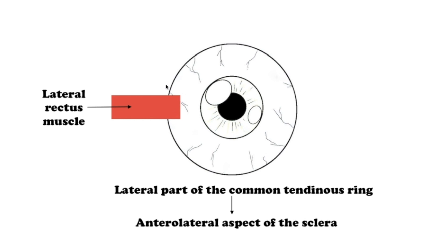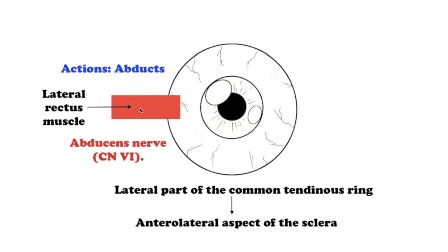The lateral rectus muscle originates from the lateral part of the common tendinous ring and attaches to the anterior lateral aspect of the sclera. This muscle abducts the eyeball. It is innervated by the abducens nerve.